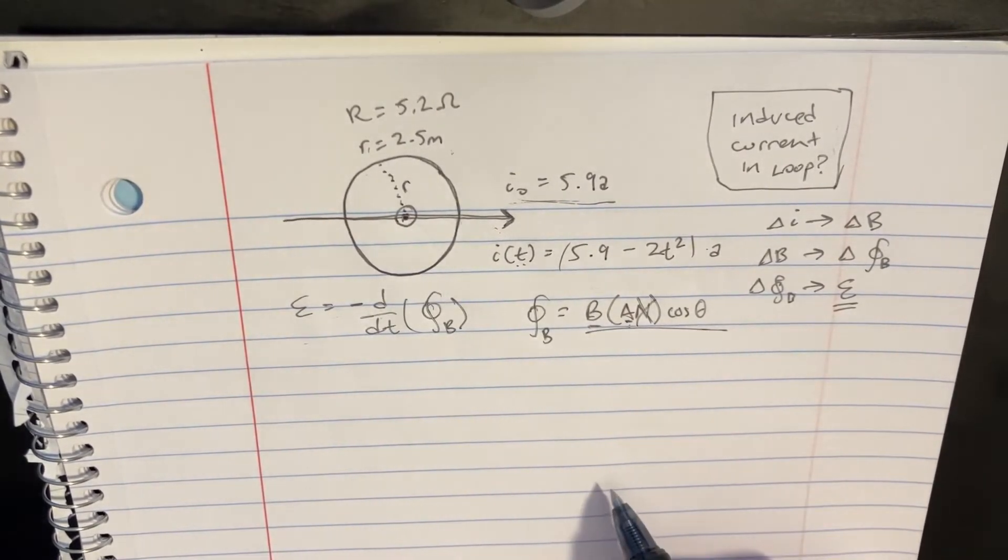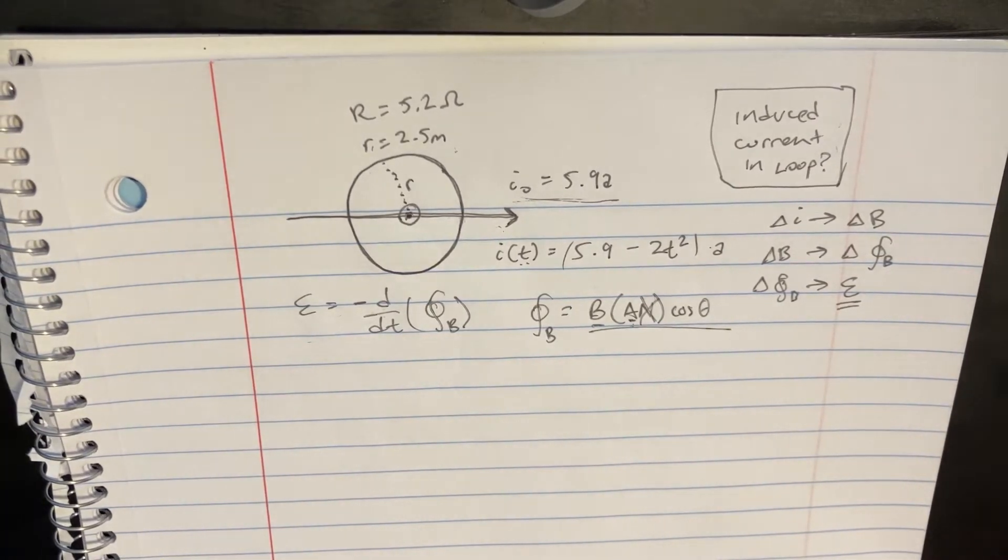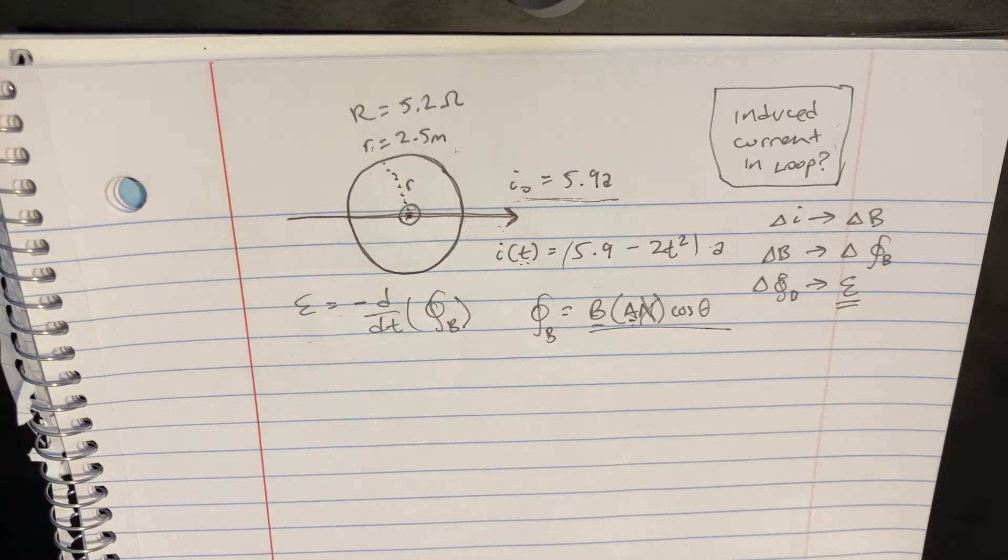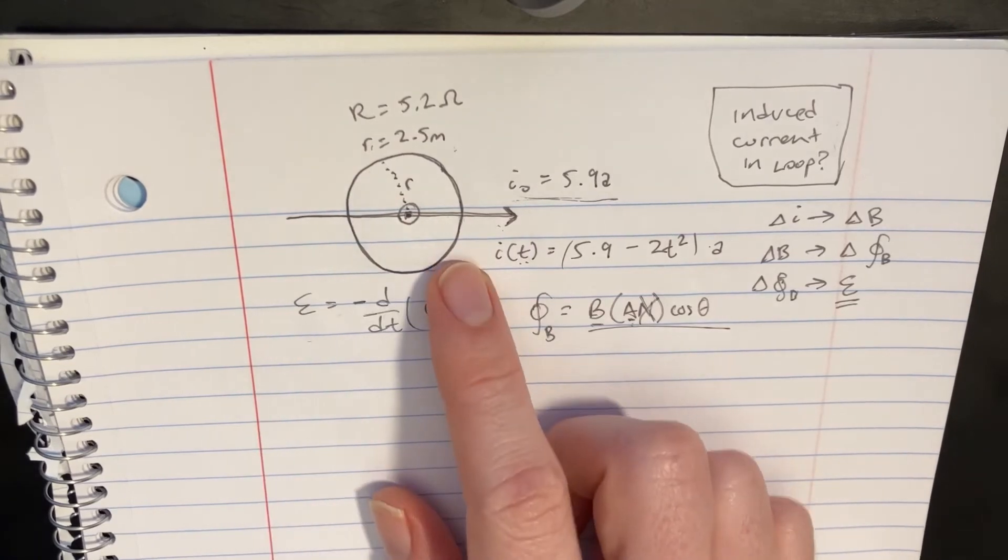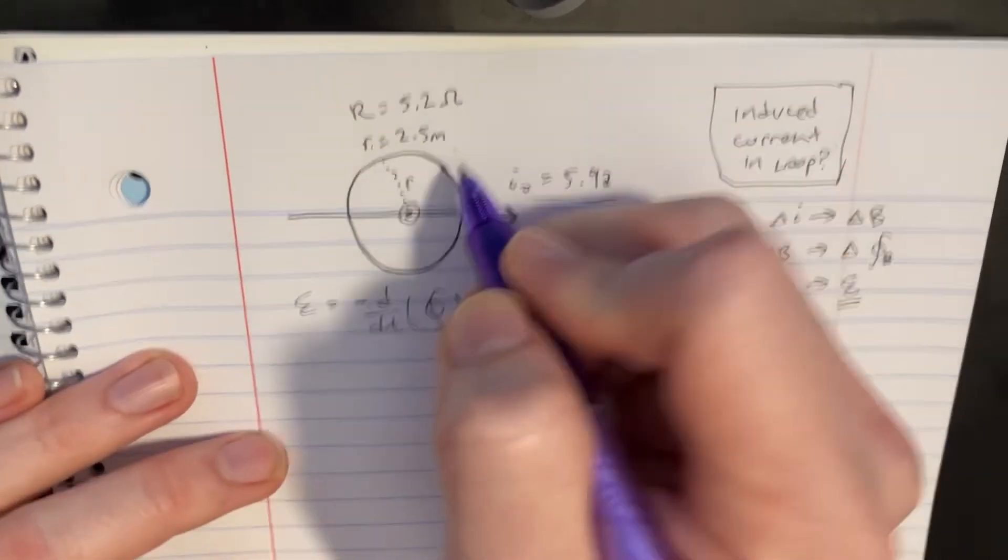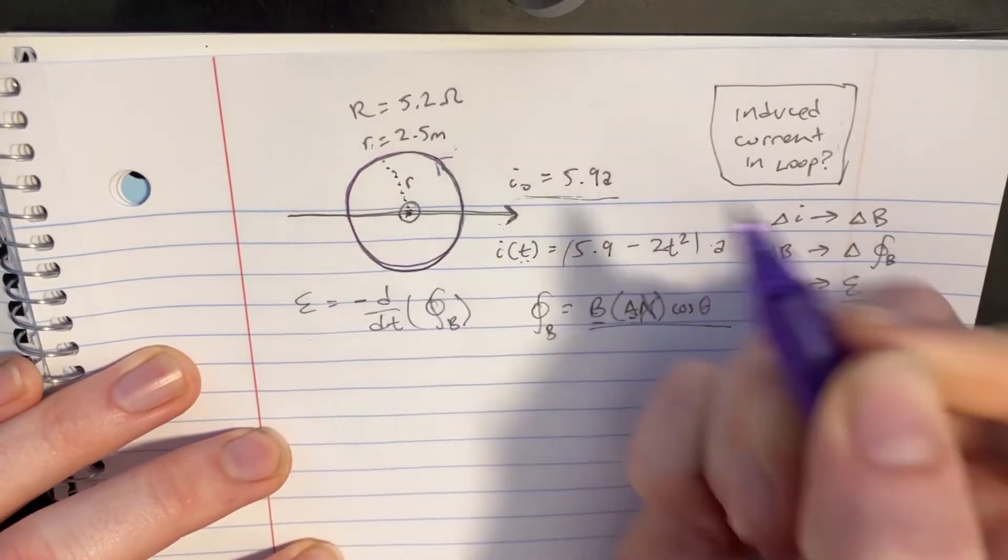Now let's figure out the direction of this magnetic field here. Let's go ahead and try to do that. Well, I know one way that I can figure out what the magnetic field is inside of a loop. I can create an Amperian loop. So I can kind of draw this Amperian loop. I guess we'll call it going that way.